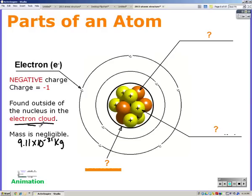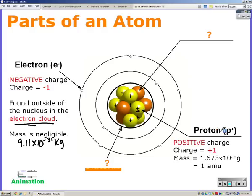In the center of the atom, the positively charged particle in the atom is the proton. So protons have a positive charge. Their mass is 1.673 times 10 to the negative 24th gram, or 1 amu, atomic mass unit.